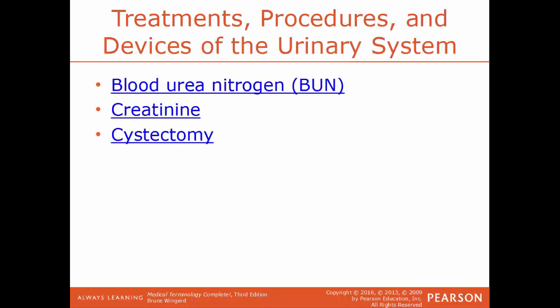Now we'll talk about some particular treatments, procedures, and devices for the system. BUN, blood urea nitrogen, is a test that measures the amount of urea and nitrogen found in the blood — basically a test to show how well your kidneys and liver are performing. Creatinine is a waste product from the normal breakdown of muscle tissue and is measured as a way to see how well your kidneys are functioning.